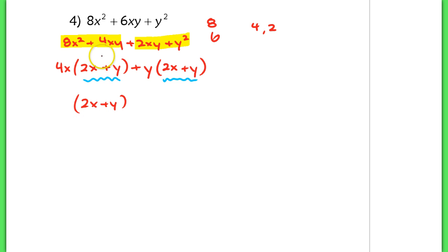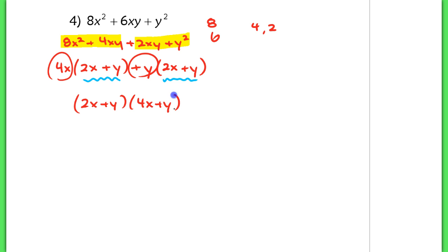Factoring that out from here leaves me with 4x and y, so that leaves me with the second binomial, 4x plus y. Even though they look tough to factor, they're not too bad as long as you go back to the same rules you would apply in factoring any regular trinomial with just one variable.